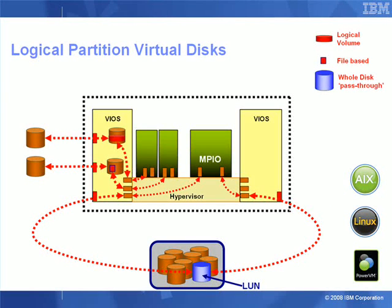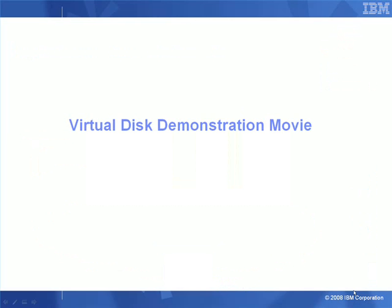Alternatively, if that whole disk is actually a LUN in a fibre channel disk subsystem, then we could allow two paths to run — one through each VIO server — and use multipath I/O in the client. We actually have one disk here rather than two, and it's the responsibility of the disk subsystem to provide protection, either mirroring or RAID internally. It looks like a single LUN or a single disk as far as the logical partition is concerned.